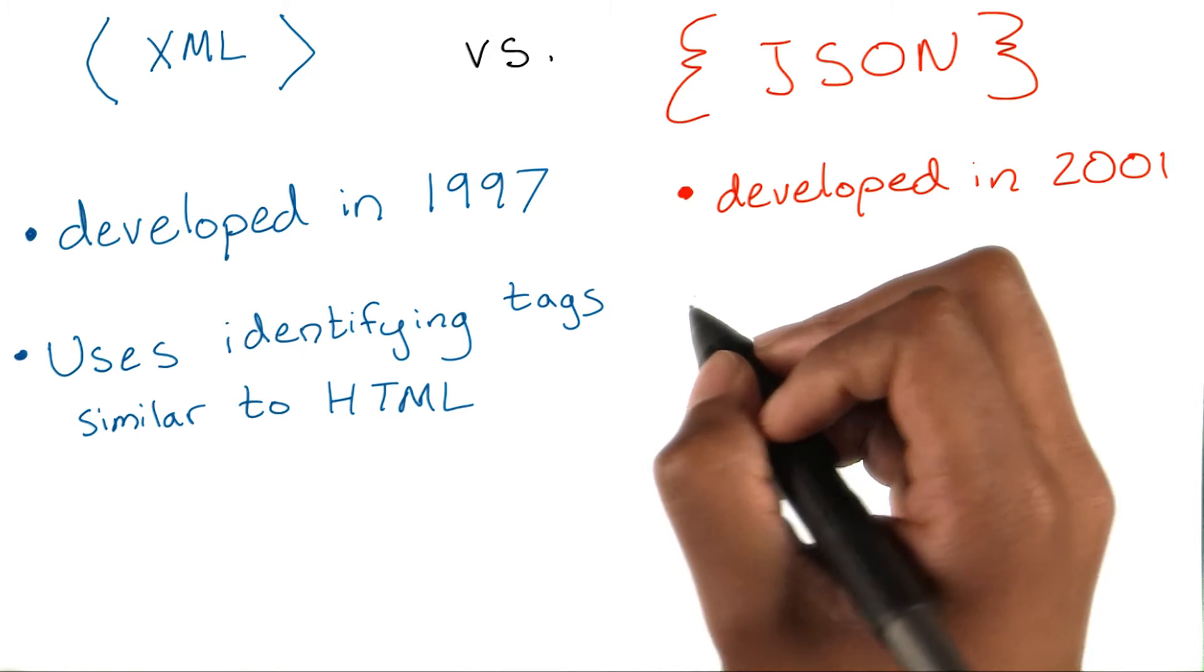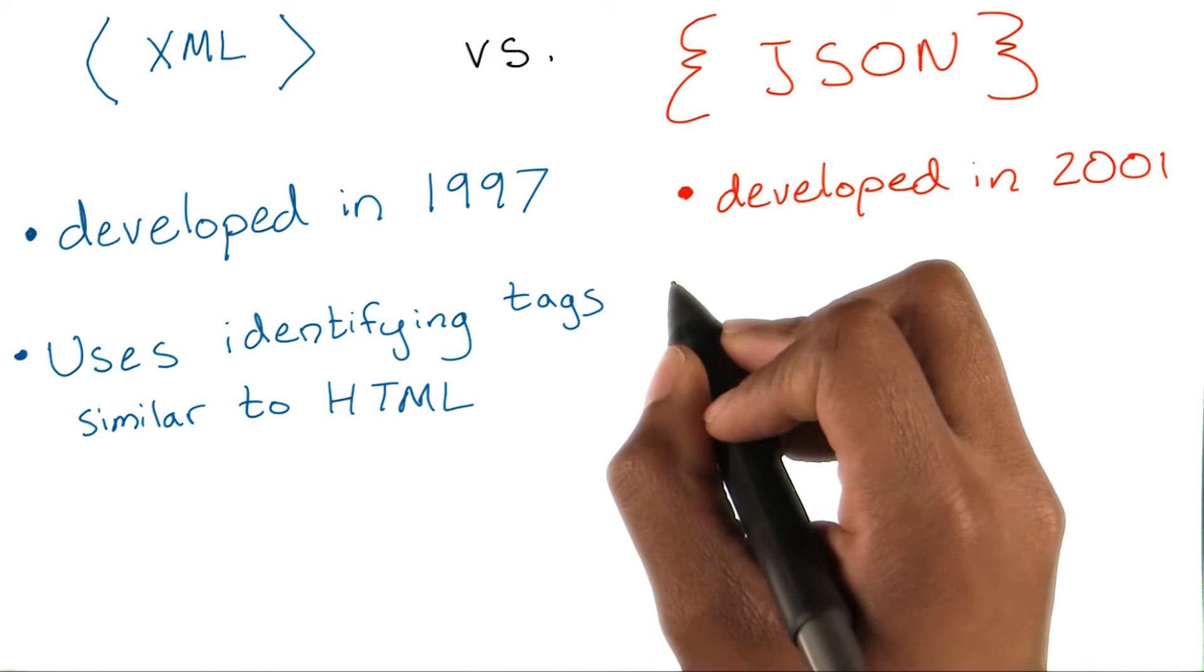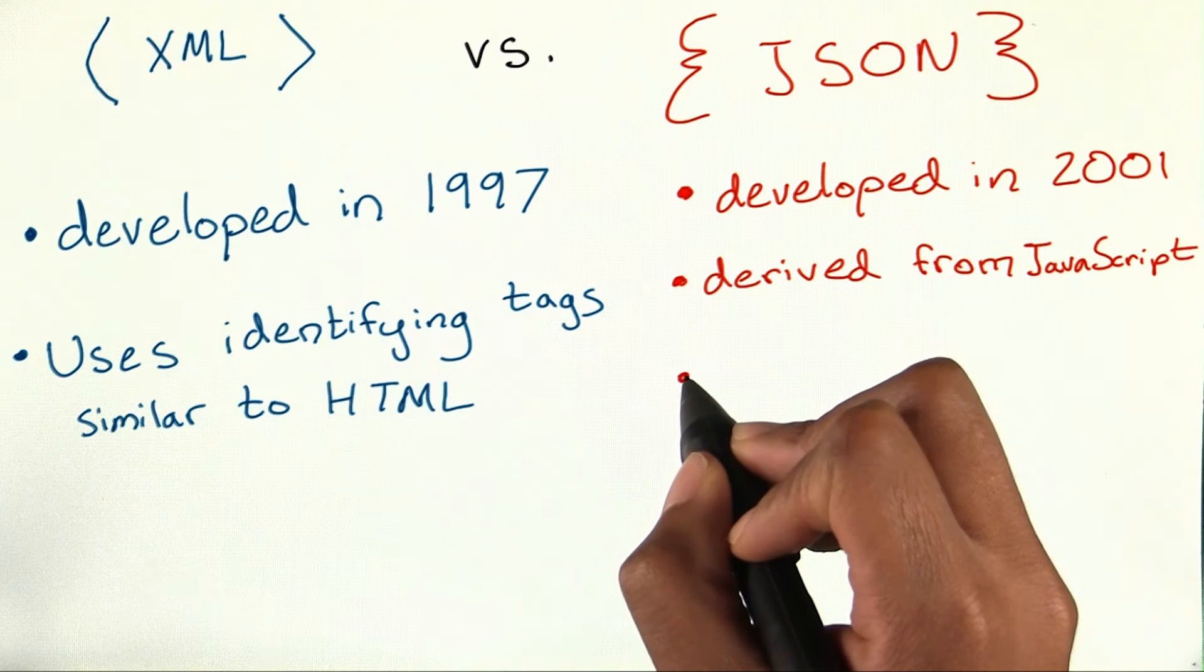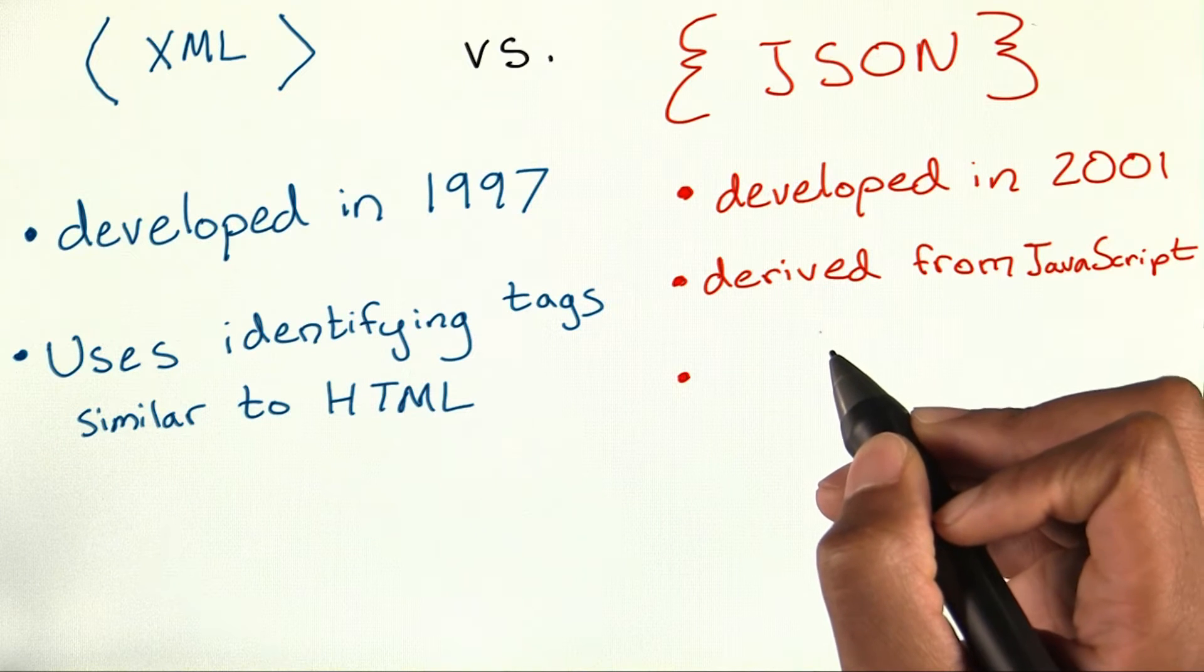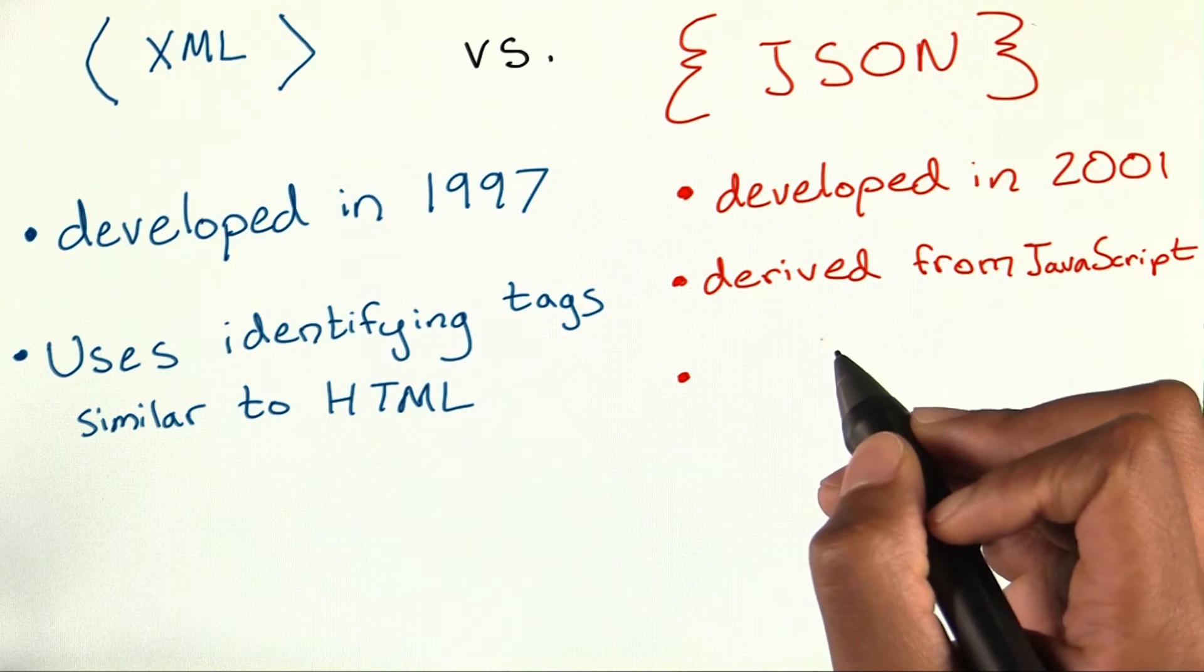JSON was developed in 2001 and is derived from the JavaScript language. Similar to HTML, it is easily human readable but can be condensed with fewer characters to be very lightweight.